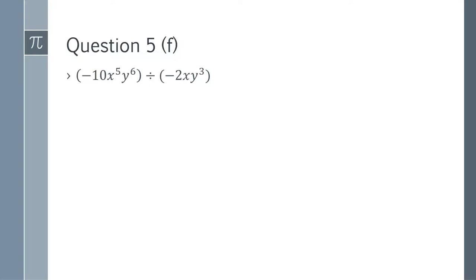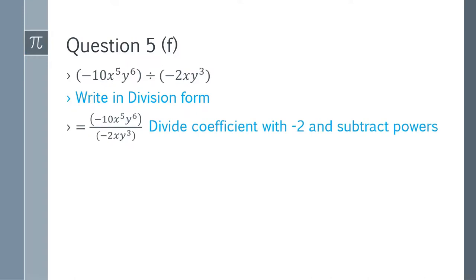Question 5f: (-10x^5 y^6) divided by (-2xy^3). Both terms have minus signs so the result is positive. Divide coefficients: 10÷2 = 5. Subtract powers: x^(5-1) = x^4 and y^(6-3) = y^3. The answer is 5x^4 y^3.